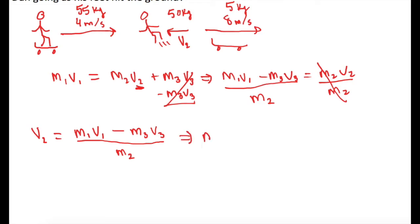So V2, or Dan's velocity, is equal to 55 kilograms times his speed, which was 4 meters per second. And we're going to subtract that with just the skateboard. So 5 kilograms times that speed of 8 meters per second. And we're going to divide that whole thing by his mass of M2, which we said was 50 kilograms.